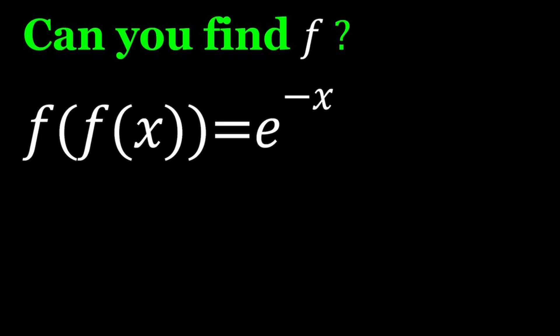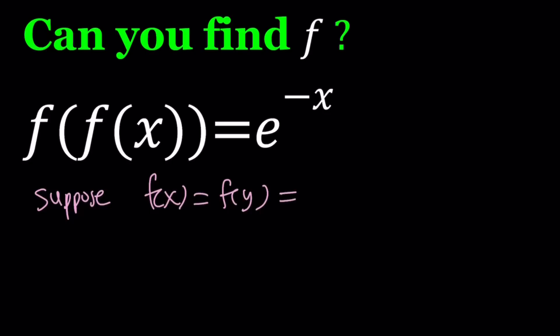Let's go ahead and suppose first that f of x equals f of y. Our goal will be to get something meaningful from here so that we can prove that f is 1-to-1, or find out if it's not 1-to-1. Well-definedness of functions requires that we can take each side as an input for our function. So if we apply f on both sides, f of f of x will be the same thing as f of f of y.